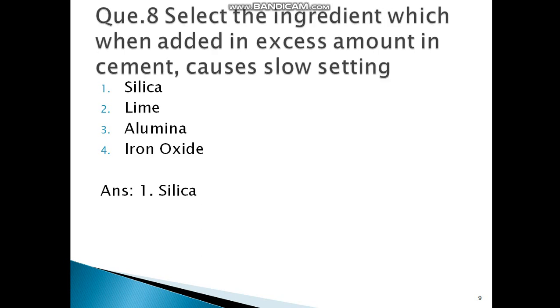Next question: Select the ingredient which when added in excess amount in cement causes slow setting. See the options: silica, second is lime, third is alumina, and last is iron oxide.